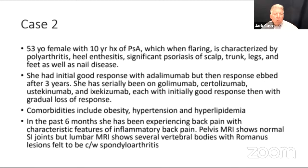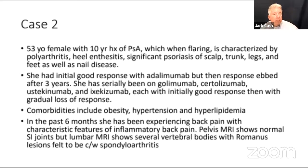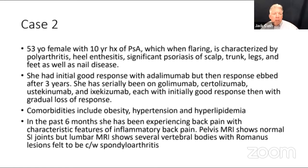The case is a 53-year-old woman with psoriatic arthritis, polyarthritis, enthesitis, scalp and nail disease. She had been on adalimumab, then went on golimumab, certolizumab, ustekinumab, and ixekizumab, and has lost response to ixekizumab. She has comorbidities and of late she's having back pain. An MRI shows normal sacroiliac joints but shows spondyloarthritis by spinal lesions — Romanus lesions. He asks the question: what are you going to do next?